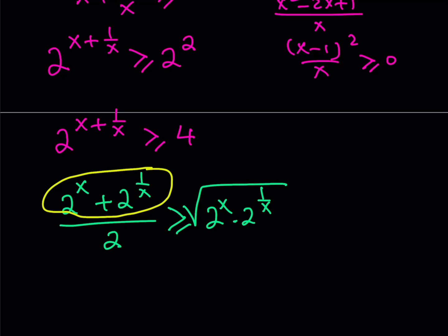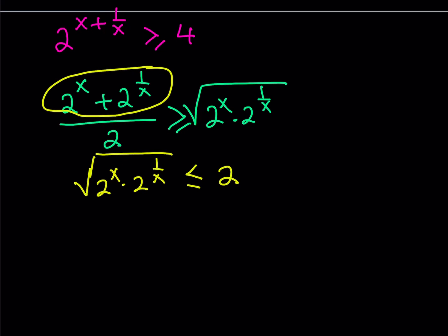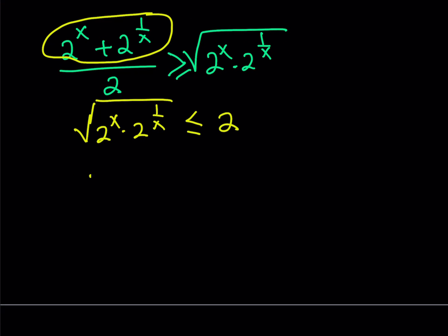But notice that we have 2 to the power of x plus 2 to the power of 1 over x here, which happens to be 4. 4 divided by 2 is equal to 2. So we basically have 2 on the left-hand side. Let's flip sides. This gives us the square root of 2 to the power of x times 2 to the power of 1 over x is less than or equal to 2. If you square both sides and add the exponents because that's what you're going to get from there, you'll get 2 to the power of x plus 1 over x is less than or equal to 4.